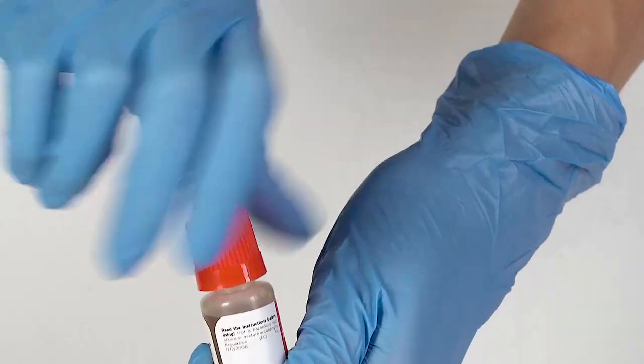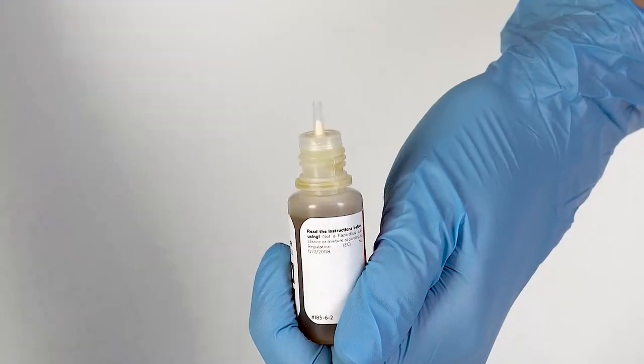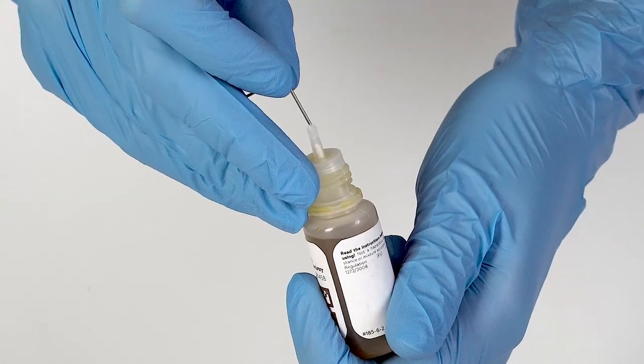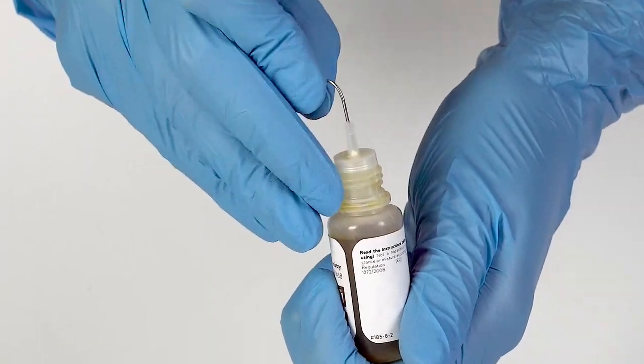To open a bottle containing a reagent, push the cap down and turn it. Pierce the bottle nozzle with an unbent paperclip.